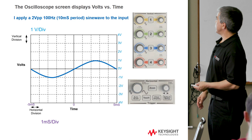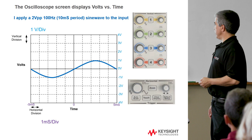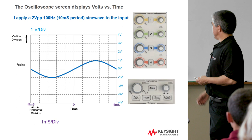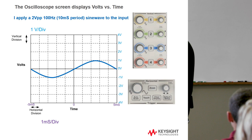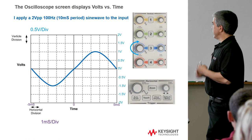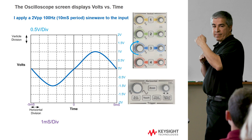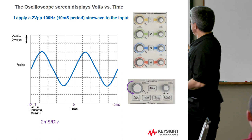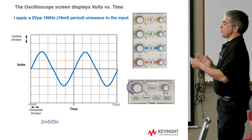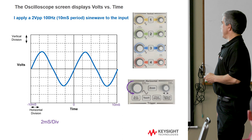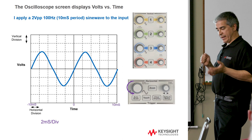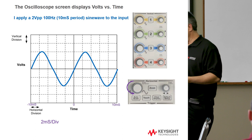Let's assume we applied a two volt peak-to-peak 100 hertz sine wave, and we've got it set to one volt per division and one millisecond per division. That's got a 10 millisecond period. So the waveform on screen will look like something that's two volts peak-to-peak. If we want to magnify that signal or cover more of the screen, we'd change the volts per division to half a volt per division, which effectively makes the signal look bigger — it's not really a bigger signal at the input, it's just scaling the signal so the downstream A-to-D converter can use more of its range. Moving the horizontal from one millisecond to two milliseconds per division gives us two periods on screen.